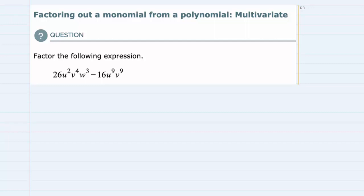In this video I'll be helping you with a problem set called factoring out a monomial from a polynomial multivariate. We're asked to factor the following expression, and from this expression we can see that there are multiple variables. So that's the multivariate part.